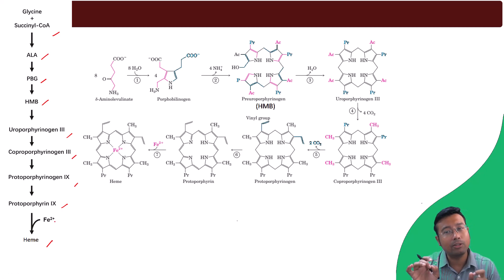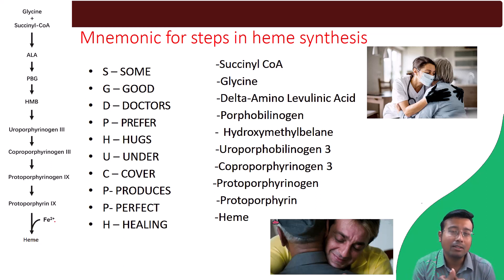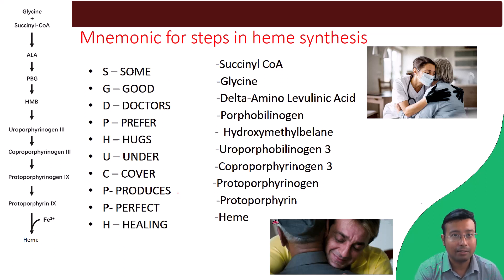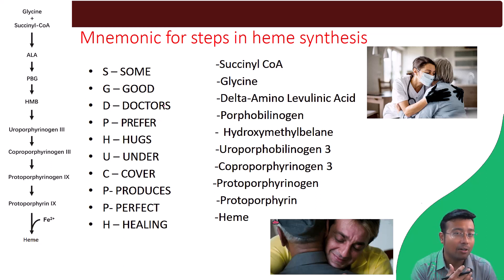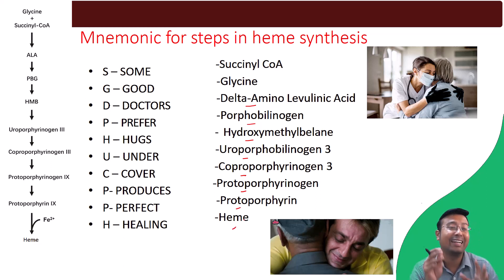You do not need to remember the cyclic structures at all, but you can choose to. Now, how can you easily remember this with the help of a mnemonic? You just remember 'jadu ki jhappi' from Munna Bhai MBBS — because when a doctor hugs a patient, they heal them. The mnemonic goes: 'Some Good Doctors Prefer Hugs Undercover, Produces Perfect Healing.' Match the initials: Succinyl coenzyme A, Glycine, Delta-aminolevulinic acid, Porphobilinogen, Hydroxymethylbilane, Uroporphyrinogen III, Coproporphyrinogen III, Protoporphyrinogen IX, Protoporphyrin IX, and lastly Heme.